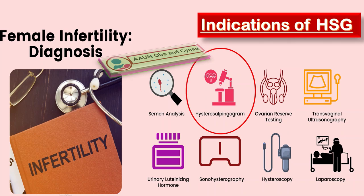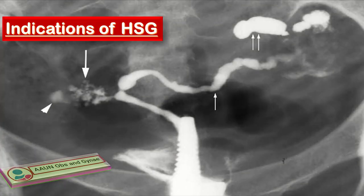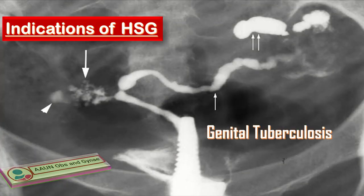Another indication of HSG is diagnosing genital tuberculosis. Tuberculous salpingitis is considered the most common finding seen on HSG and occurs most commonly at the junction between the isthmus and the ampulla. Tuberculosis granulomas can also become calcified in the tubes, individual cavities, and in the ovaries.